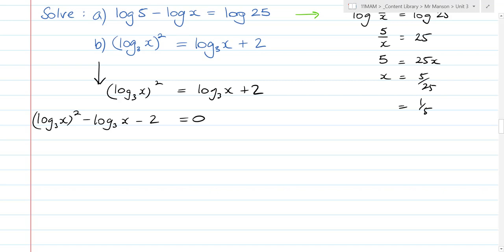So if I rearrange this now, I get log base 3 of x^2 minus log base 3 of x minus 2 equals 0. If you're feeling particularly fluent and confident, you don't need to do my next step. But I'm going to do the next step. And that will be to let some other thing, y I'm going to use, equal log base 3 of x. And then I get y^2 minus y minus 2 equals 0. Now it really looks like a quadratic.